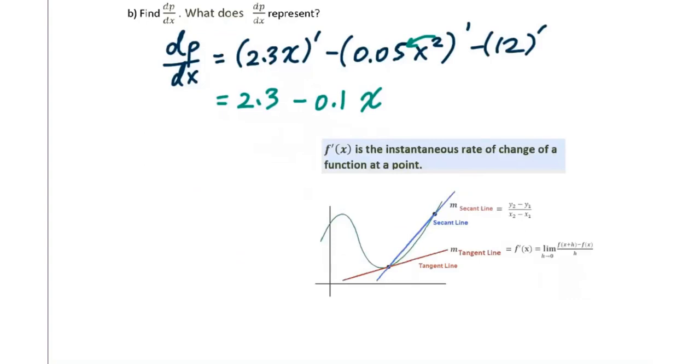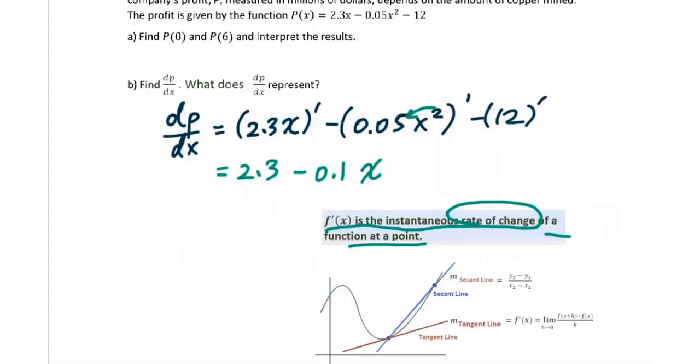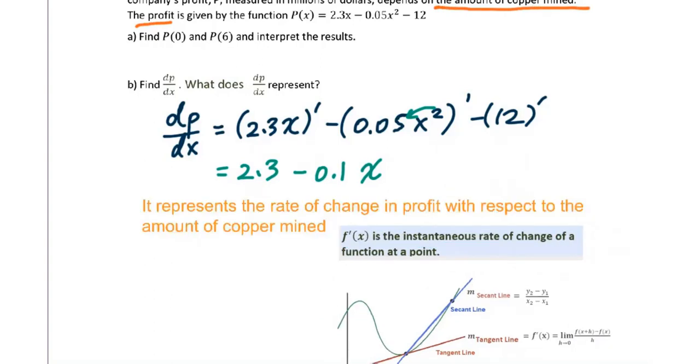According to the definition, the derivative is the instantaneous rate of change of a function at a point. Therefore, dP/dx is the rate of change of the profit with respect to the amount of copper mined. Let's see the meaning of the first derivative again. It represents the rate of change in profit with respect to the amount of copper mined.